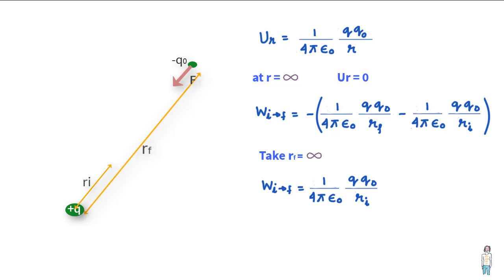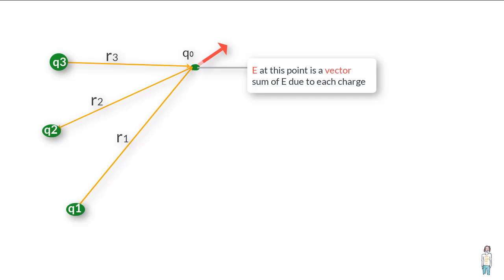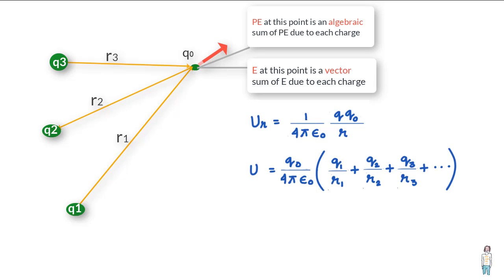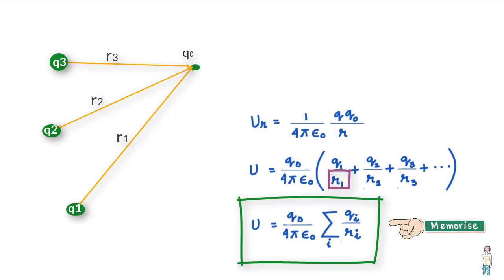Now, if the electric field in which a charge is placed is due to several point charges at various distances from charge Q0, the electric field value at that point is the vector sum of the electric fields due to each charge. However, the potential energy is the algebraic sum of the contributions from each charge. We can write this equation for several charges as a simplified expression. The potential energy of the system also becomes zero when Q0 is at infinite distance from each of these charges — that is, when R1, R2, R3, etc. are all infinite.